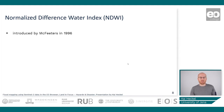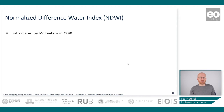It was invented in 1996 by McFeeters. Actually, in the same year another index with the exact same name was also invented by Gao. The difference between these two is that the one by McFeeters is usable to detect water bodies, while the one invented by Gao is more sensitive to reacting to vegetation moisture content.